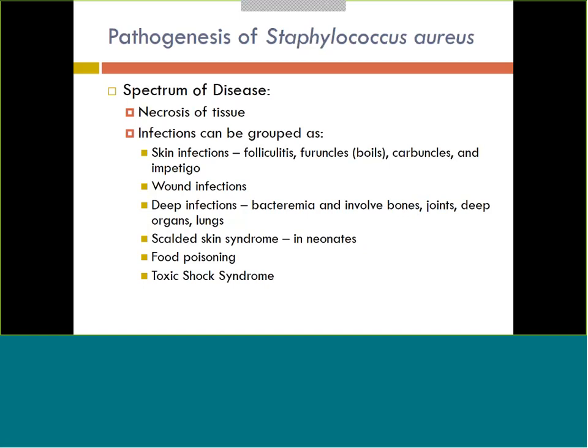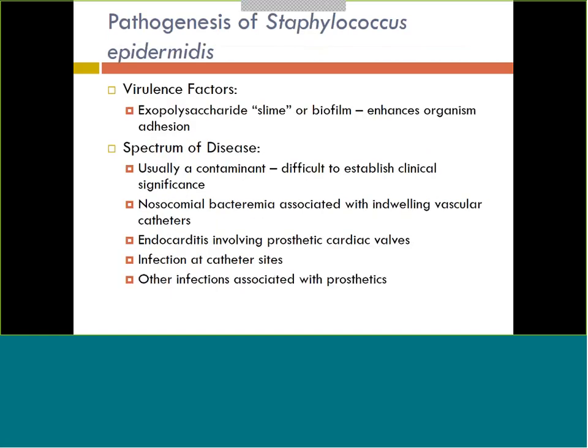As far as disease goes, staph aureus can cause pretty much anything. It's huge with skin infections — folliculitis, which is inflammation of the hair follicle, boils, impetigo — a children's skin infection — lots of wound infections, deeper wound infections into organs and bones, scalded skin syndrome, food poisoning, toxic shock syndrome, UTIs, and pneumonia. The list just goes on and on, so basically know that staph aureus is a huge cause of disease and can cause almost any infection.